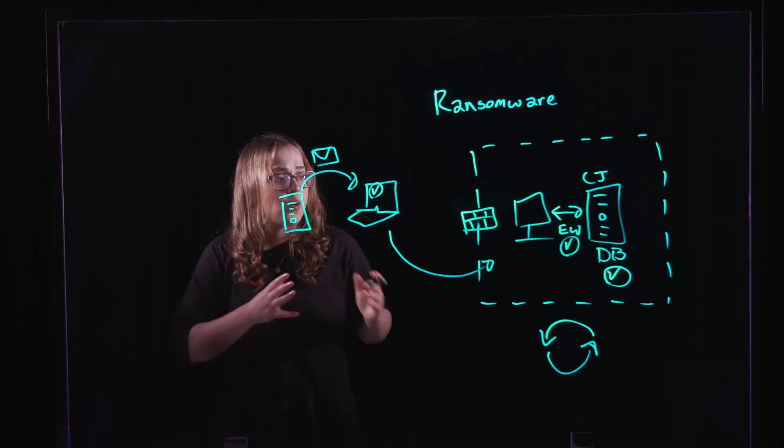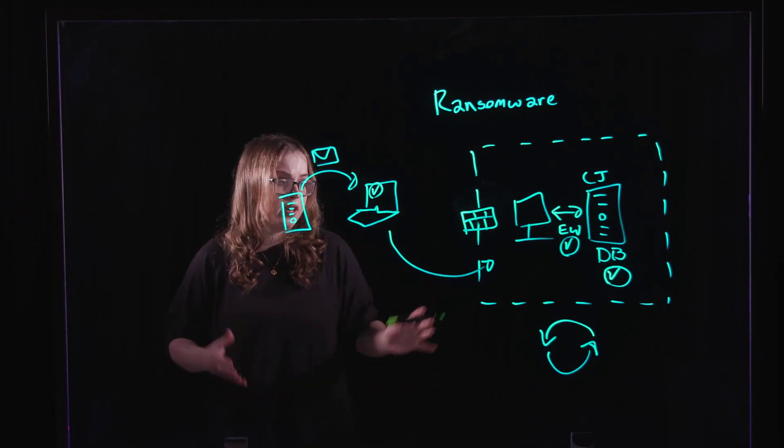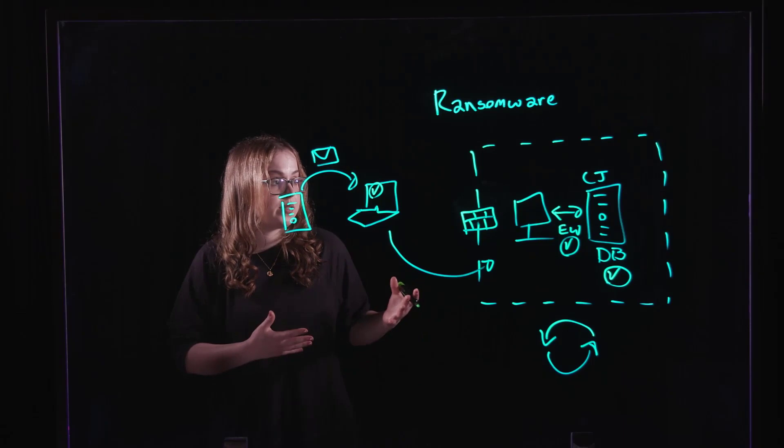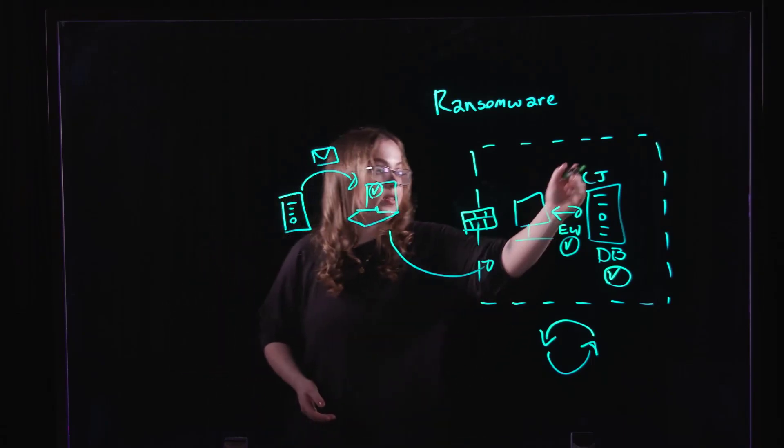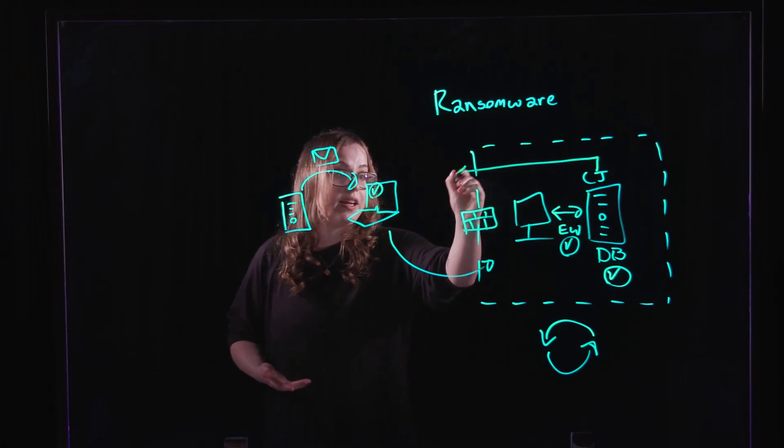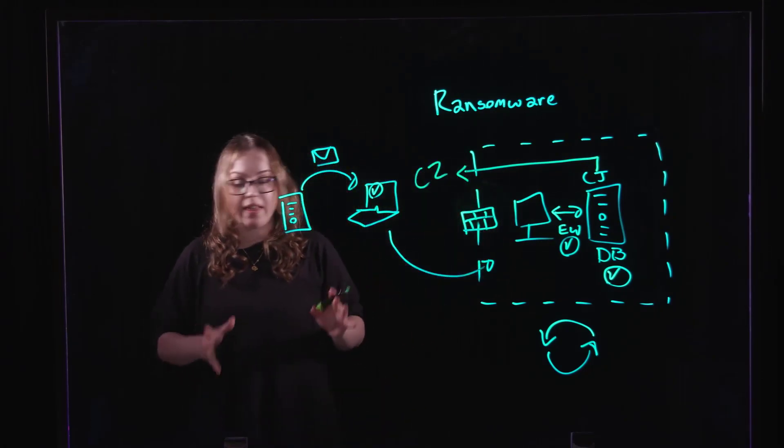Even with disaster recovery, it's important that we have the capabilities to stop this attack before it occurs. An increasingly common tactic that we're seeing with ransomware is double extortion, where the attacker, once they reach the crown jewels, will try and exfiltrate data outside to something like a command and control server. We can prevent that from occurring.